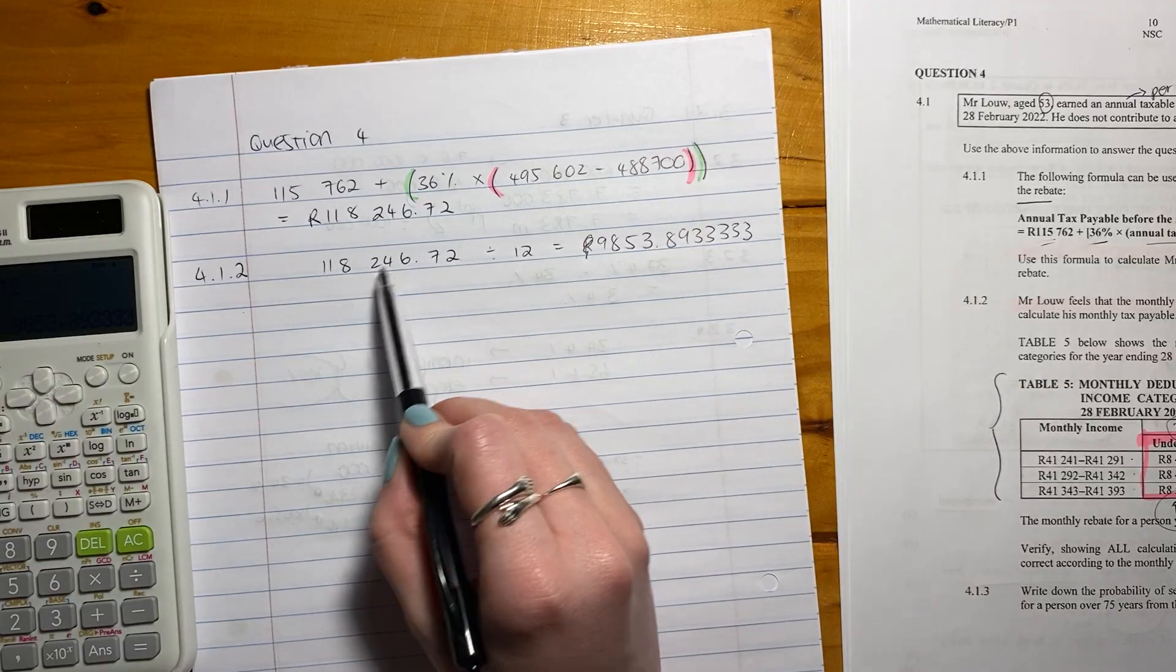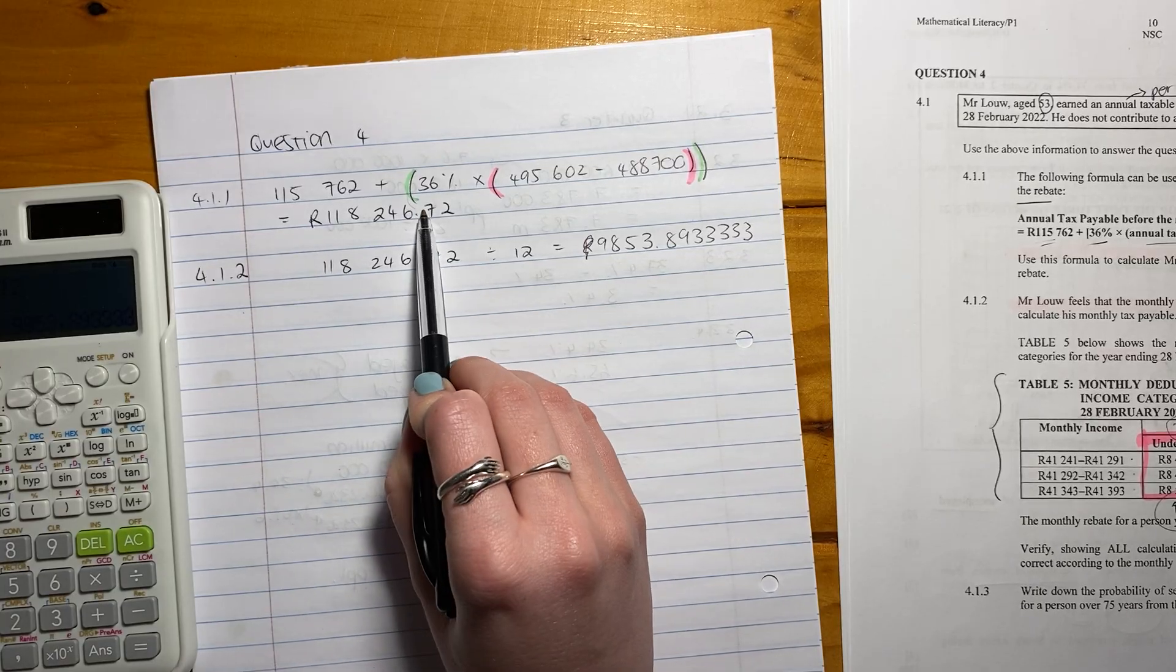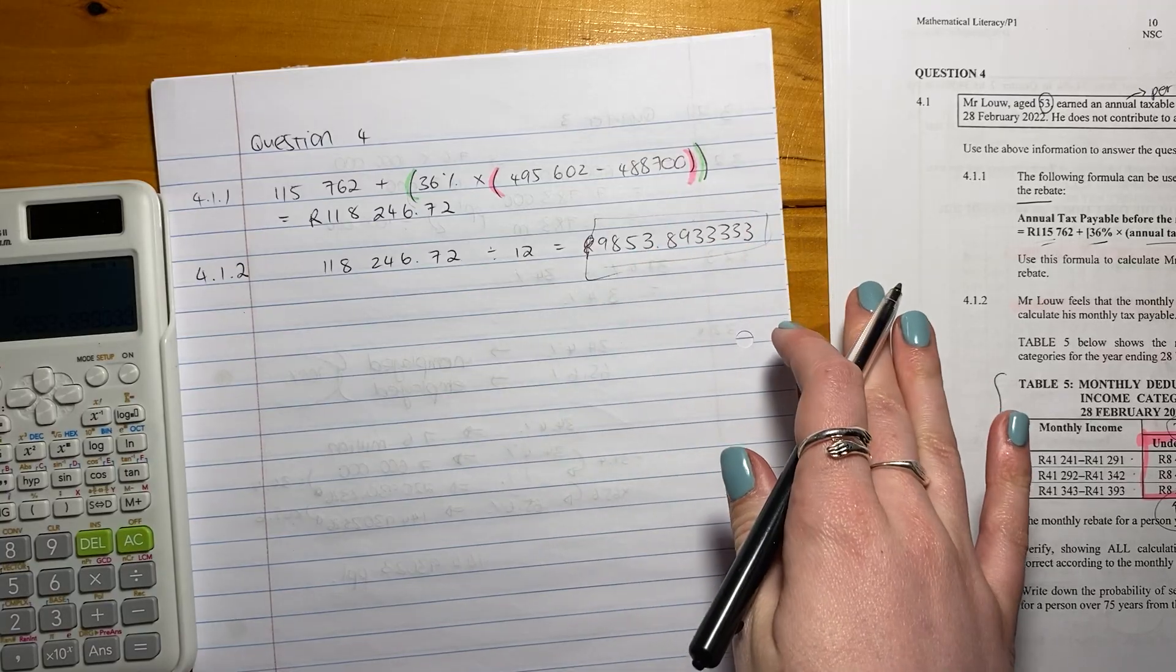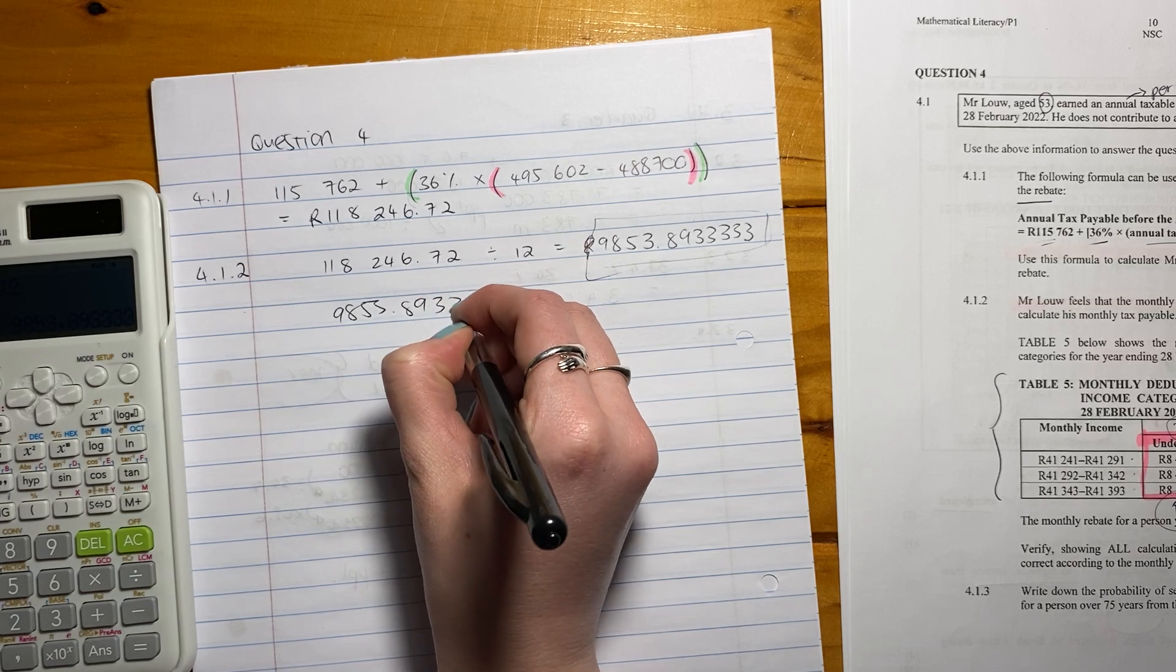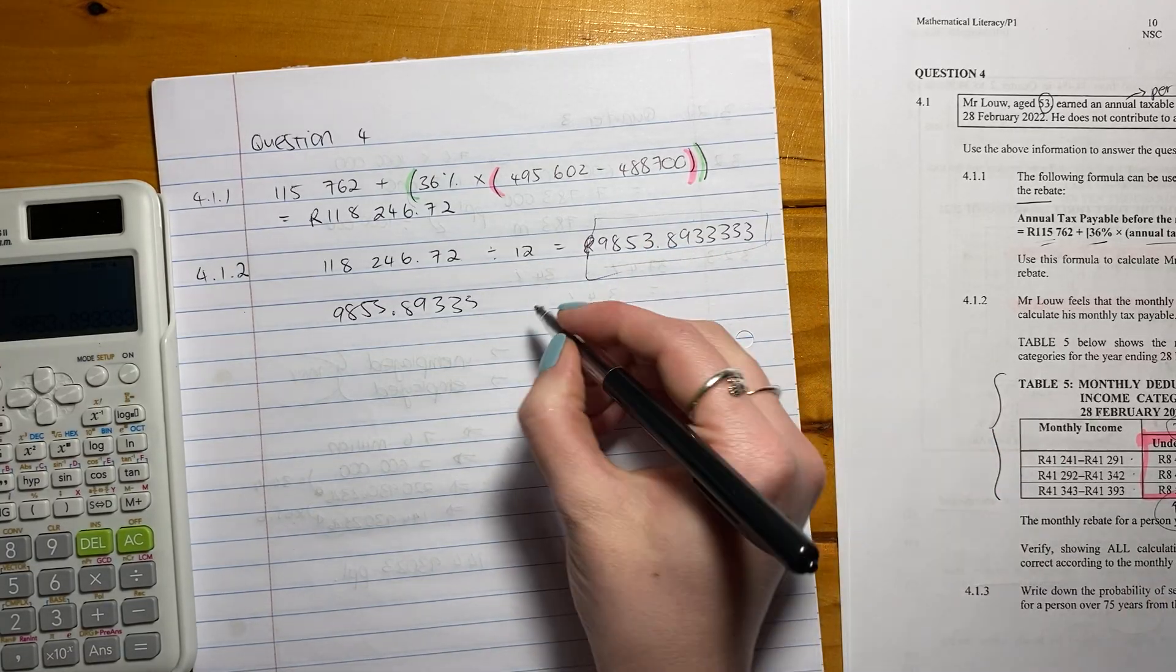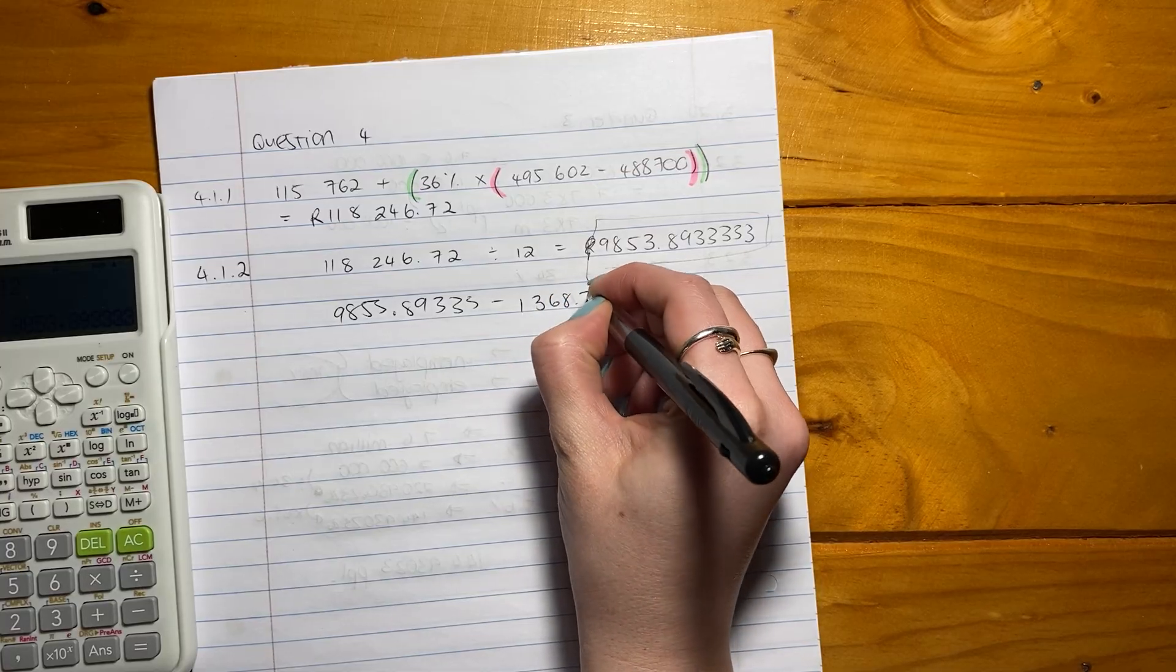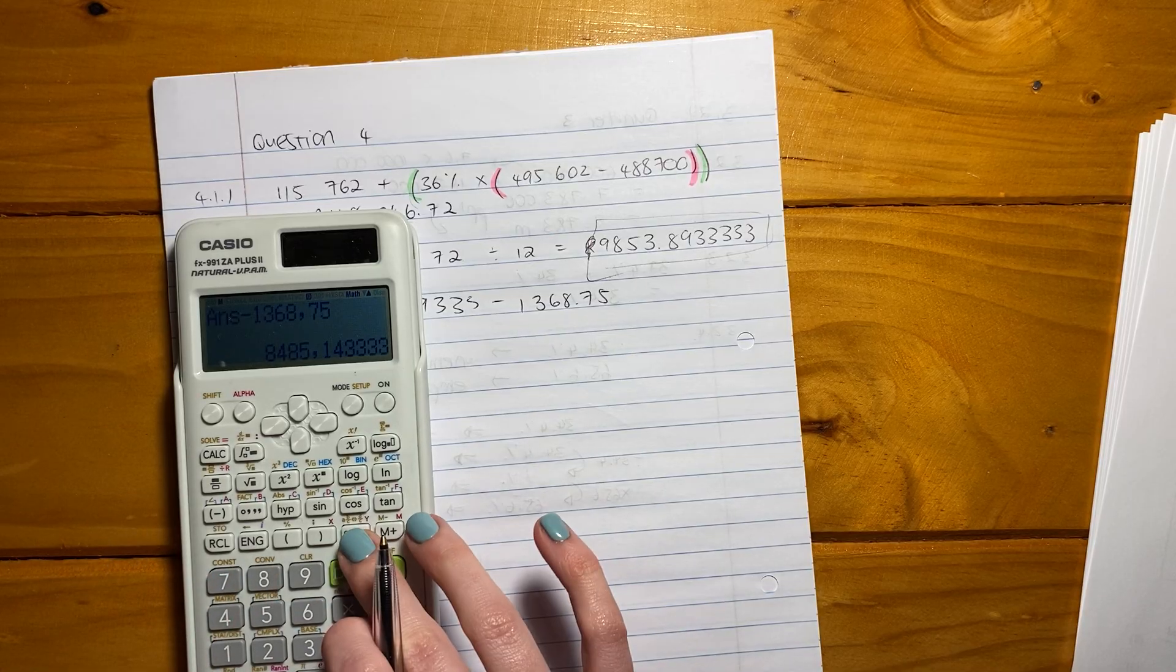So first thing you do is you say, the amount of tax that I said he was going to pay at the end of this tax year, I'm going to divide it by 12 because this is per year. For the year, this is for the month. So this is how much he's going to pay each month. But we now need to take the rebate off that because that was before the rebate. So we need to say 9853.8933. Remember, I'm not rounding anything off yet. I'm not rounding it off yet because I'm not done. I'm not at my end point. How much does he get in a rebate each month? He gets 1368.75. So we're going to write that 1368.75. And we're going to write that down. And we're going to do the calculation.